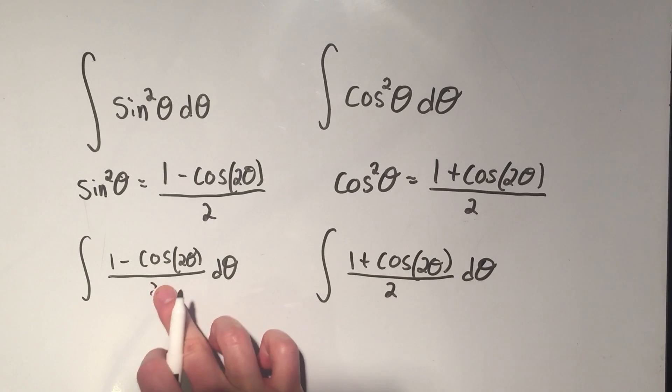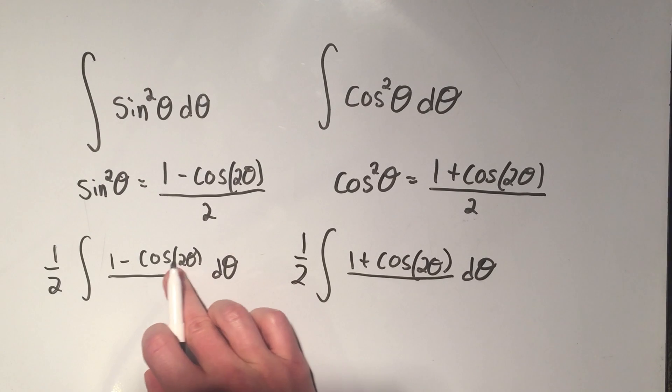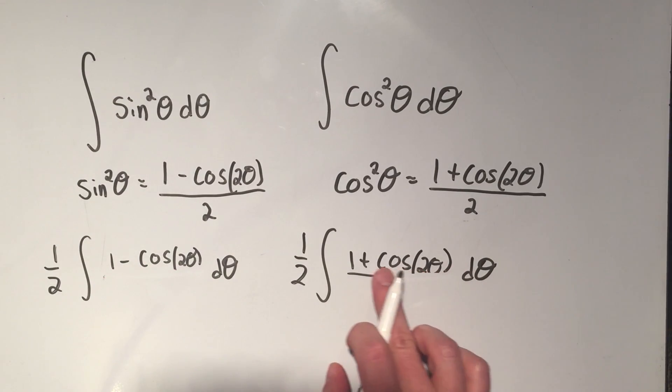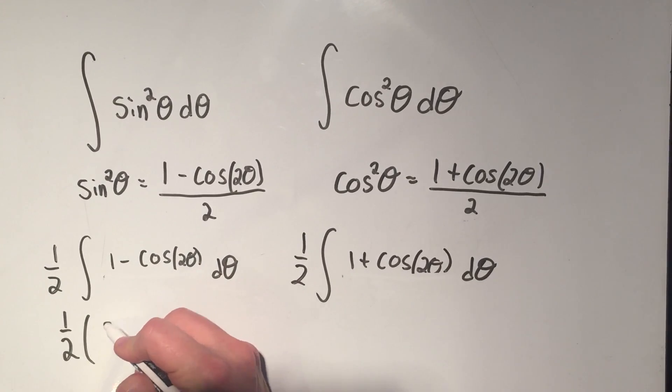Both of them have a factor of 2 in the denominator, so I can just pull out that 1 half. And now I can just perform these antiderivatives.